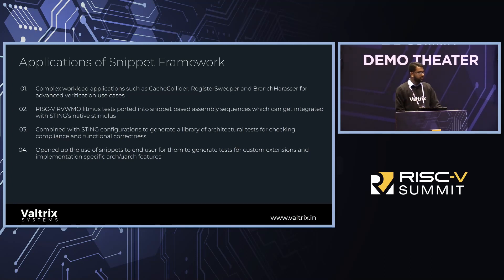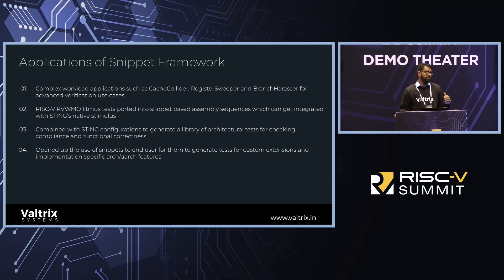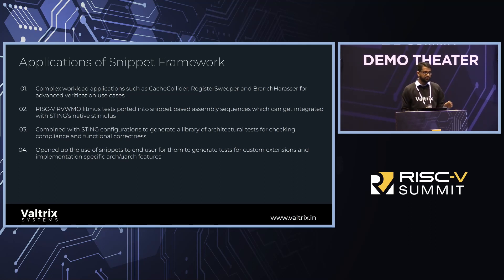Using this framework, we have developed cache colliders, register sweeping, and branch harassing workloads in-house. It can also be used to target custom extensions and custom instructions — you can use the framework to implement those as well. Additionally, we have ported the RISC-V RVWMO litmus tests into this framework, integrating them with Sting's native stimulus, and we continue adding more stimulus alongside existing tests.